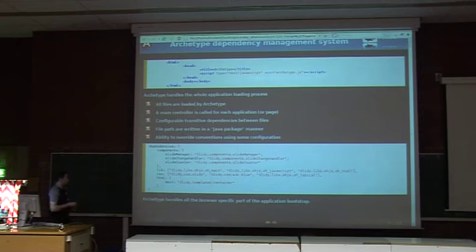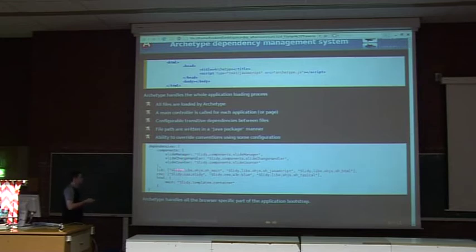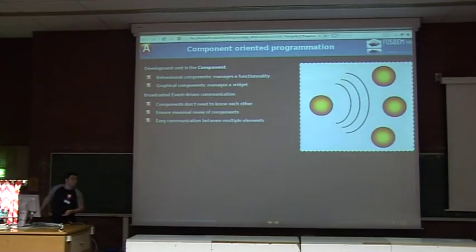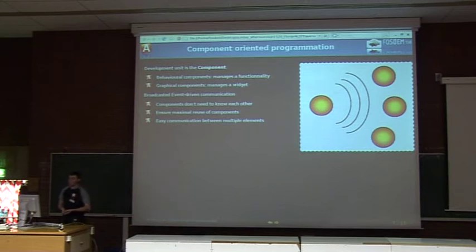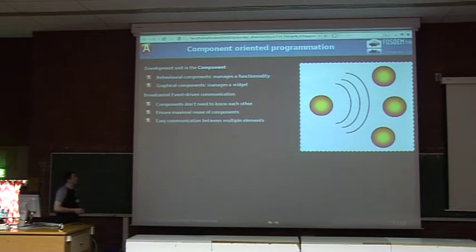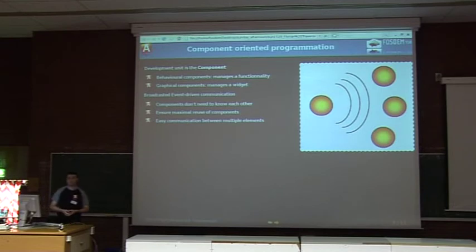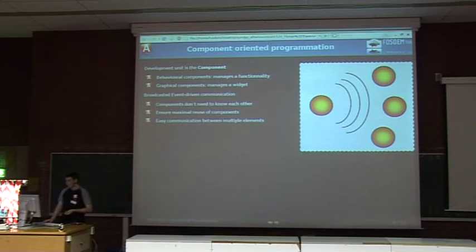Here's an example of how dependencies are declared in a component. You just say: dependencies — I need this component, this component, this component, these libraries, this CSS, and this template. It's really simple and natural. The development unit is really the component. There are two kinds of components: behavioral components and graphical components. The graphical component is used as a widget with the JavaScript code and the loading of templates and CSS files.